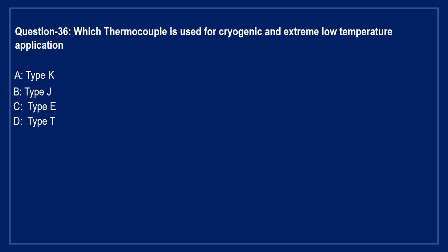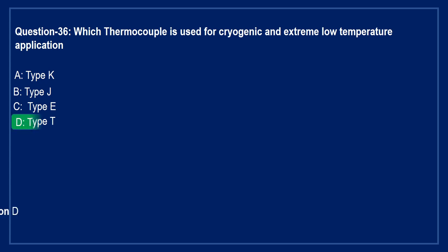Next question: which thermocouple is used for cryogenic and extreme low temperature applications? Option A: type K. Option B: type J. Option C: type E. Option D: type T. The right answer is Option D — type T thermocouple can be used for cryogenic and extreme low temperature applications.